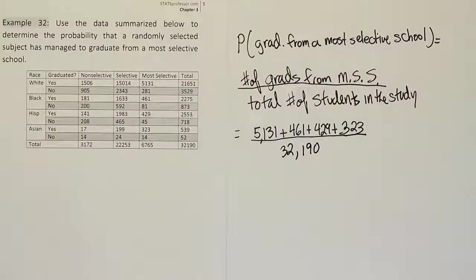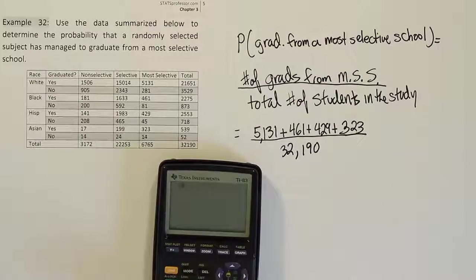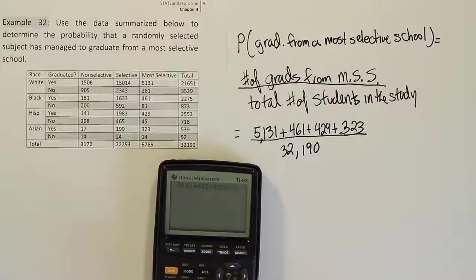All right, let's add these up and see what it comes up to. So we'll have 5131 plus 461 plus 429 plus 323.